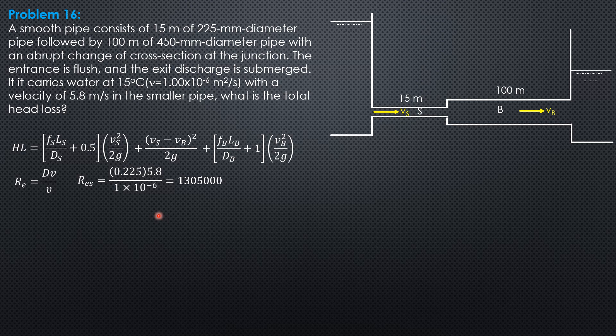Then, formula for smooth pipe by Colebrook, 1 over square root of Fs equals 2 log of quantity Reynolds number square root of Fs over 2.51. Using the calculator, solve for Fs. Fs is 0.01113.